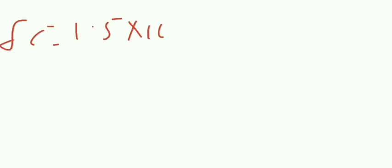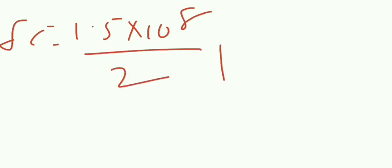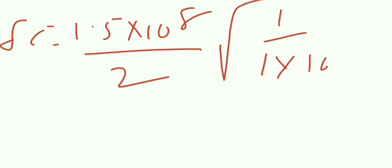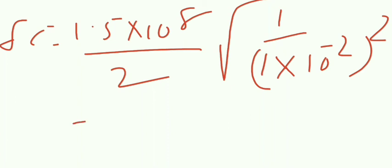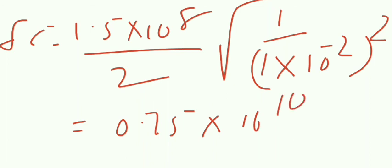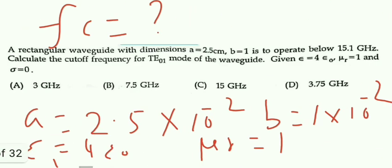Now Fc equals V by 2 times root of (M by A) squared plus (N by B) squared. With M equal to 0, that term cancels. N is 1 and B is 1 centimetre (1 into 10 power minus 2). So Fc equals 1.5 into 10 power 8 divided by 2 times (1 by 10 power minus 2), giving 0.75 into 10 power 10, that is equal to 7.5 gigahertz.